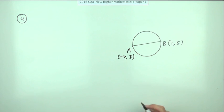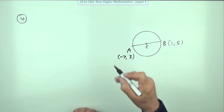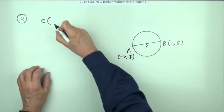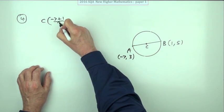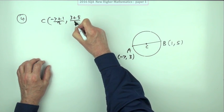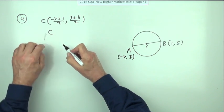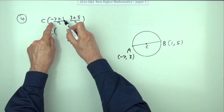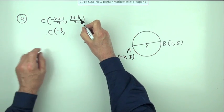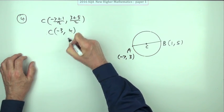What's the equation of the circle? The centre of the circle will be the midpoint of the diameter. So we'll get that midpoint first of all — average of the coordinates, average of the x's, average of the y's. That means C will be the point: negative 6 divided by 2 is negative 3, and 8 divided by 2 is 4.